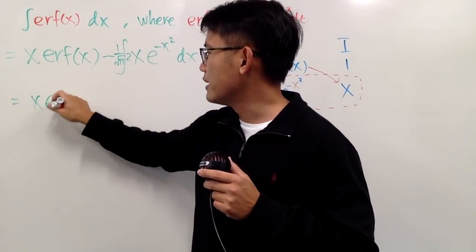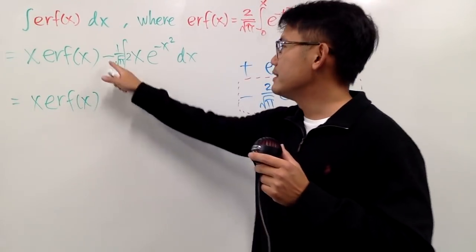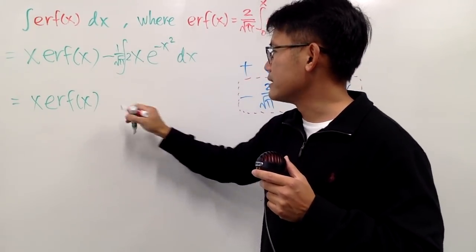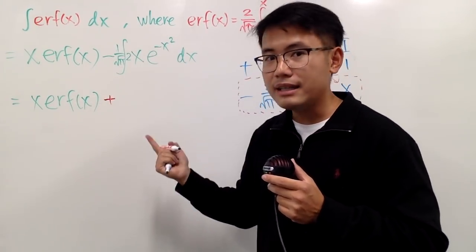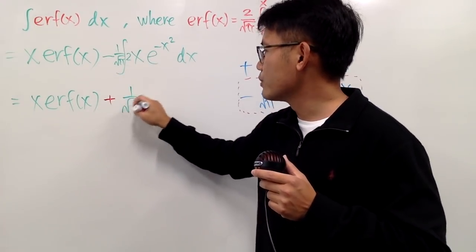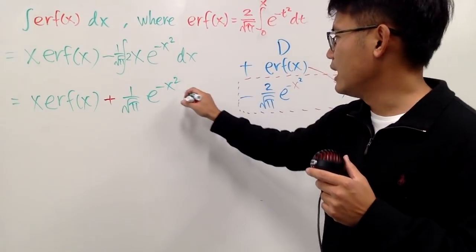And the first part of the answer stays the same. So let me just write that down. But this is going to be cancelled after you do the u sub. So you pretty much will have this part by itself. So you have plus, right? And then you have that 1 over square root of pi, e to the negative x squared. Just like that, and we are done.